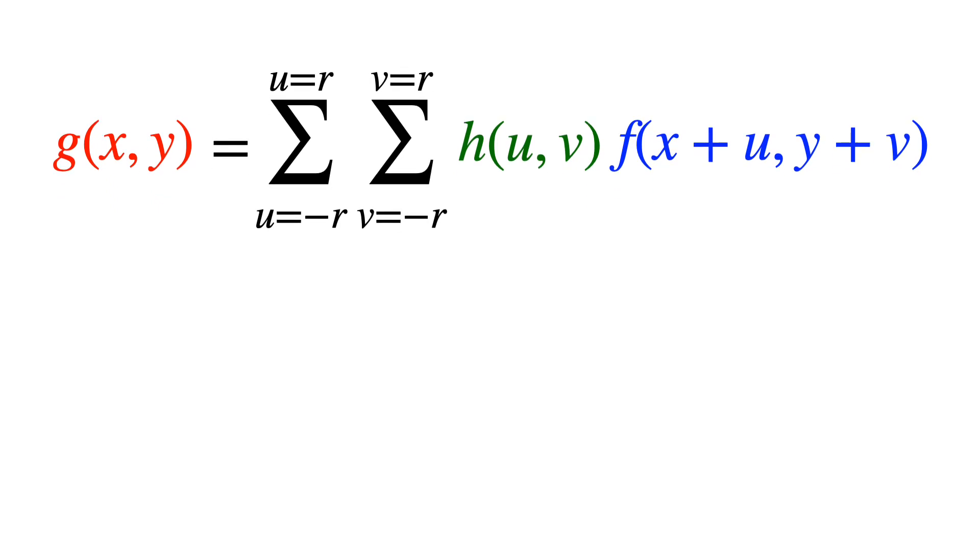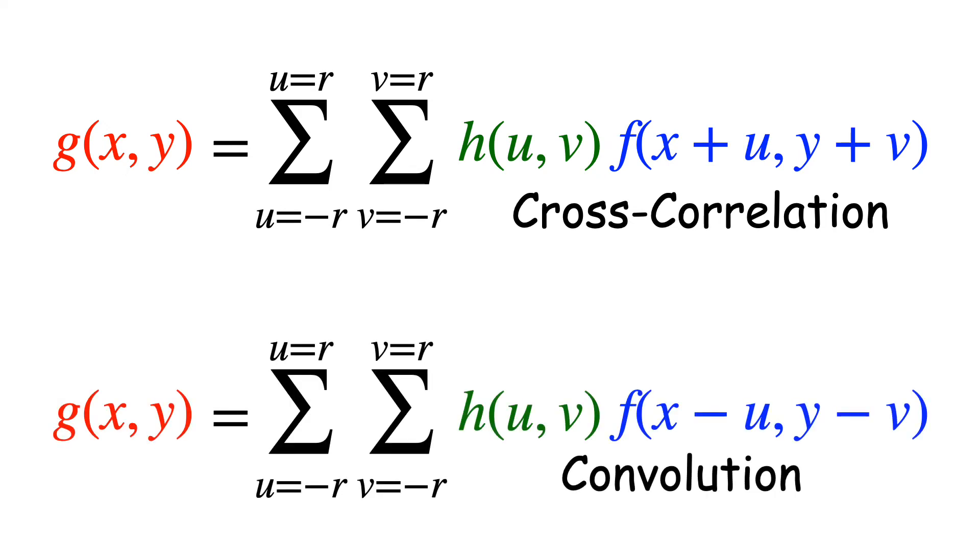This formula has a name. It's called cross-correlation. And it's very similar to something called convolution, where the kernel is flipped horizontally and vertically before being applied. Both formulas give the same result for symmetric kernels.